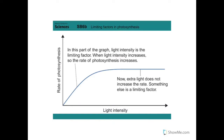Light intensity is measured in lux. If there is no light, there is no photosynthesis — photosynthesis cannot happen in the dark. Photo means light. So if light intensity is zero, the rate is zero. If you increase the light intensity initially, it will increase the rate of photosynthesis. During this first part of the graph, which I'll call part A, there's a direct proportion between light intensity and rate of photosynthesis. This is called a linear relationship.